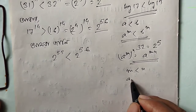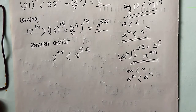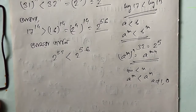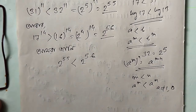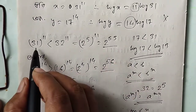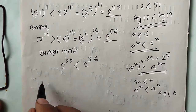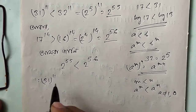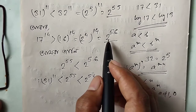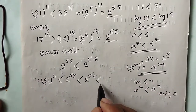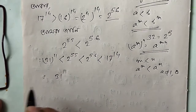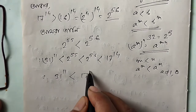Since m less than n implies a to the power m less than a to the power n, we conclude: 31 to the power 11 is less than 2 to the power 55, which is less than 2 to the power 56. And 2 to the power 56 equals 17 to the power 14. Therefore, 31 to the power 11 is less than 17 to the power 14.